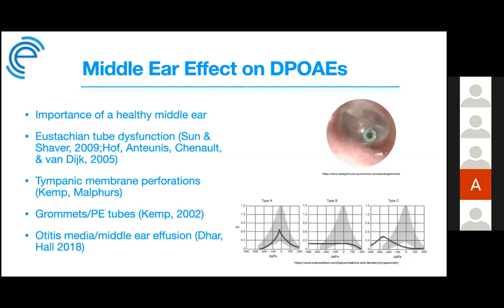Eustachian tube dysfunction creates negative pressure that reduces OAE amplitude due to increased middle ear impedance, mostly affecting low frequencies. A study by Sun and Shaver in 2009 found that with middle ear pressures of −100 daPa, DPOAE amplitudes can be attenuated by 4 to 6 dB at frequencies of 1000 Hz and lower. Modern instruments offer pressurized OAE testing — performing tympanometry first and measuring the DPOAE at tympanometric peak pressure — compensating for negative middle ear pressure and reducing false referrals, as shown by Hoff in 2005.